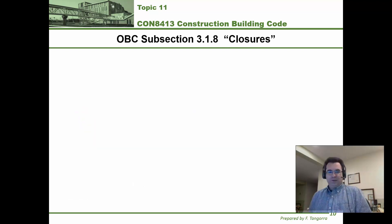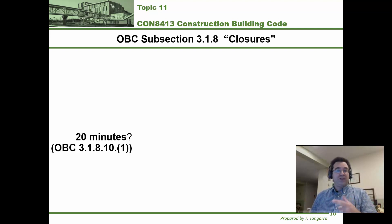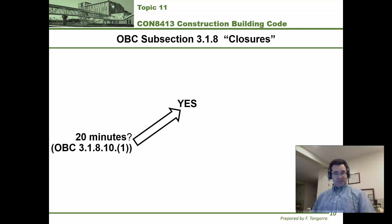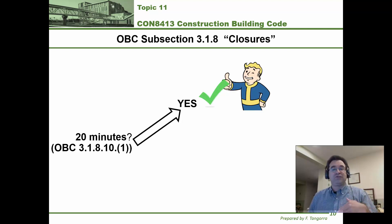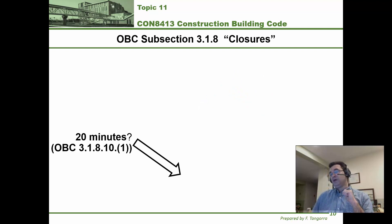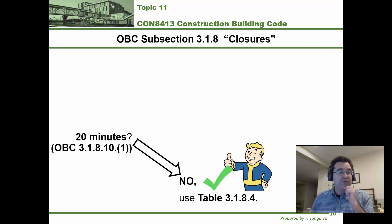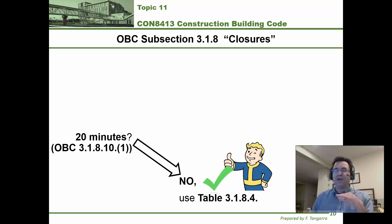To be careful: fire resistance rating (FRR) applies to walls, floors, roofs, and ceilings. Fire protection rating (FPR) is for closures only. The process for closures is simple: first check whether the closure is allowed to be 20 minutes using that sentence. If yes, you're done. If no, go to Table 3.1.8.4. These are the steps, and you'll be practicing them in the homework.